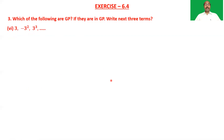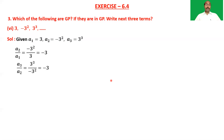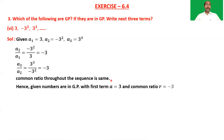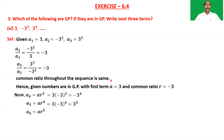Sixth sequence: 3, −3², 3³, and so on. a₂/a₁ = −3²/3 = −3 and a₃/a₂ = 3³/(−3²) = −3. The common ratio is the same, so the given numbers are in GP. The next three terms are a₄ = −3⁴, a₅ = 3⁵, and a₆ = −3⁶.